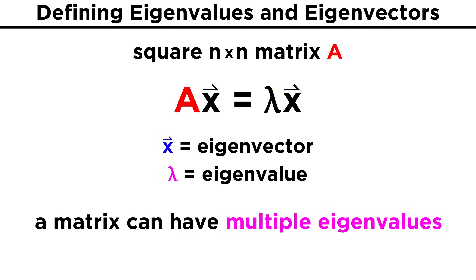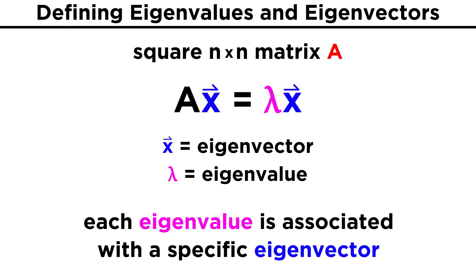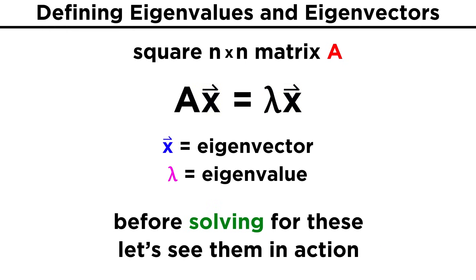The matrix A can have multiple eigenvalues, but no more than n, the number of rows and columns in the matrix. Furthermore, each eigenvalue will have its own eigenvector that is associated with it. Before we start trying to solve for eigenvalues or eigenvectors, let's see them in action so we can further cement the definition we just mentioned.